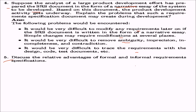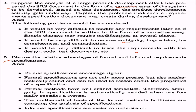Fifth question: discuss the relative advantages of formal and informal requirement specification. Formal specification encourages rigor — you want to write everything using mathematics and formal methods like calculus expressions. Formal specifications are not only more precise because you use mathematical constructs that can be proved, but also mathematically sound. They use logic and have well-defined semantics, so ambiguity in specification is automatically avoided.